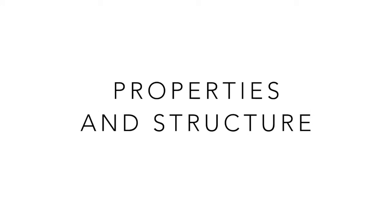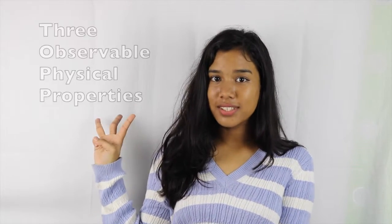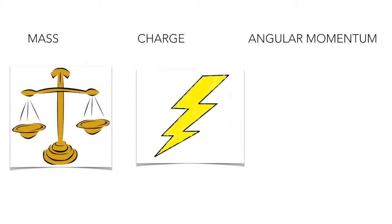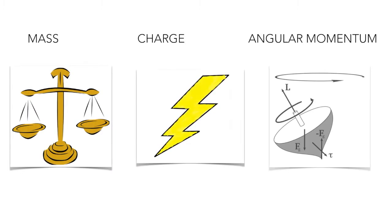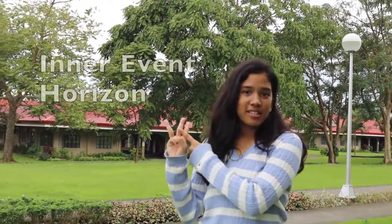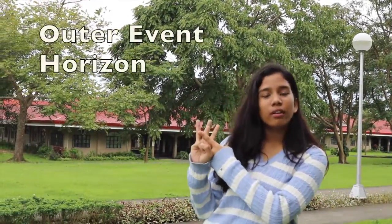Properties and structure. The No Hair Theorem states that at a stable condition after formation, the black hole has three observable physical properties: its mass, its charge, and its angular momentum. A black hole is made up of three parts: the singularity, the inner event horizon, and the outer event horizon.